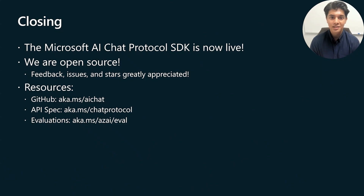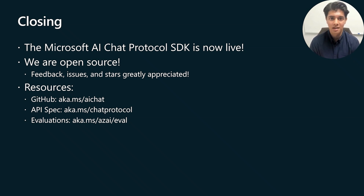In conclusion, the AI chat protocol SDK is now live and we welcome you to try it out. Since we're in public preview, any issues or feedback on our GitHub would be greatly appreciated, and a star would also be appreciated. We're available on GitHub at aka.ms/AIchat. The API spec is also on GitHub at aka.ms/chatprotocol. If you want to check out the evaluations, that's aka.ms/AZAIeval. Thanks so much for tuning into this session and I hope you have a great Build.